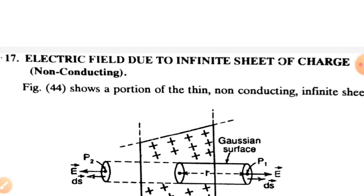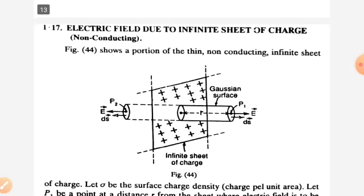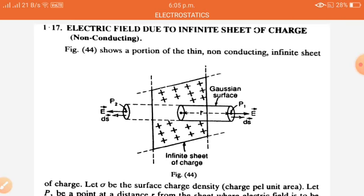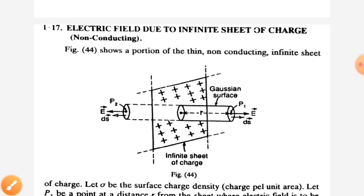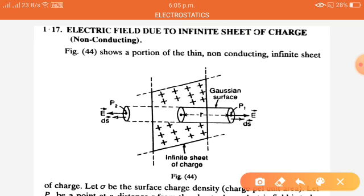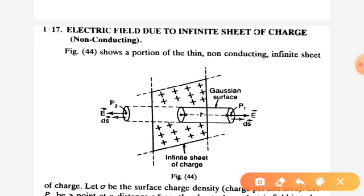By using Gauss's law, we can also determine the Electric Field Intensity due to an infinite sheet of charge — this is the second application. Consider an infinite sheet having charge Q. We calculate the Electric Field Intensity at a point P which is at a distance r from the sheet. We construct a Gaussian surface in the form of a cylinder having height 2r (distance r on each side) and radius r.